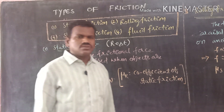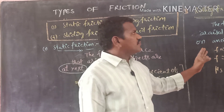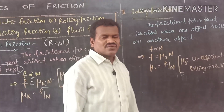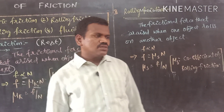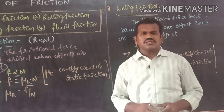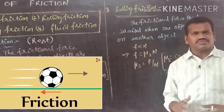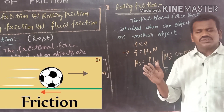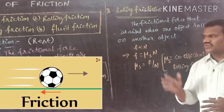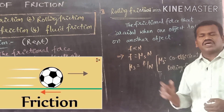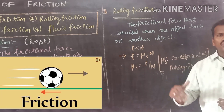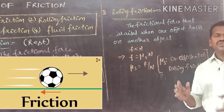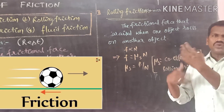Let us come to the second type of friction, that is rolling friction. What is the meaning of rolling? One of the objects should roll on another object. For example, a stone is rolling from the top of a hill — it is rolling on the surface.